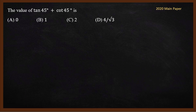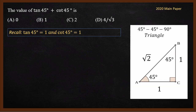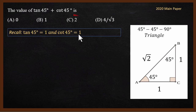This is from the 2020 main paper. What is the value of tan 45° plus cot 45°? tan 45° is 1. For cot 45°, using the 45-45-90 triangle, it equals adjacent over opposite, which is 1 by 1, so cot 45° is 1. Alternatively, cot 45° equals 1 by tan 45°, which is 1. Adding 1 plus 1 gives 2, so the correct answer is C.